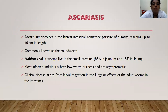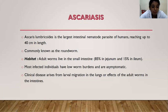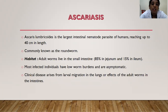The first disease I will talk about is Ascariasis. Ascaris lumbricoides is the largest intestinal nematode parasite of humans, reaching up to 40 cm in length, commonly known as roundworm. The habitat of adult worms is the small intestine — 85% in the jejunum and 15% in the ileum. Most infected individuals have low worm burdens and are asymptomatic. Clinical disease arises from larval migration in the lungs or the effects of adult worms in the intestines.